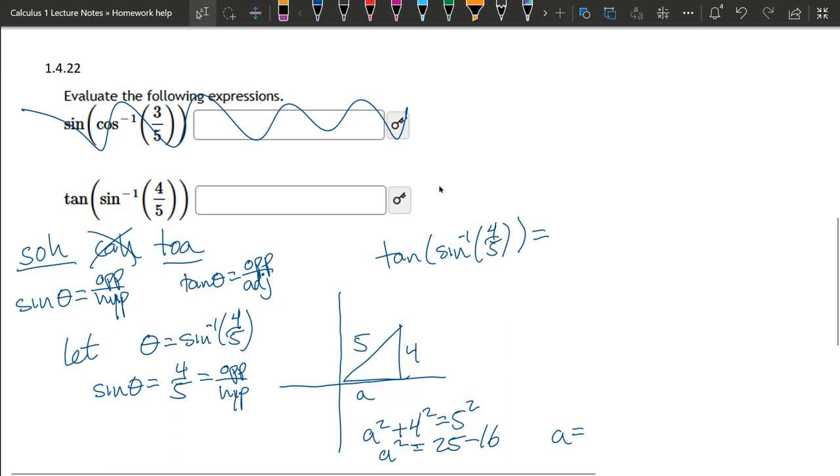So A is plus or minus square root. 25 minus 16 is 9. So A is plus or minus 3. We're in quadrant one. So everybody's positive. So you're just going to go with the plus 3, not the minus 3.